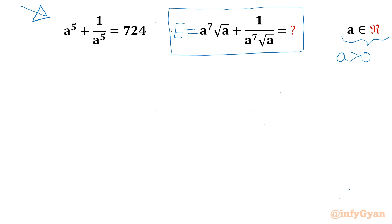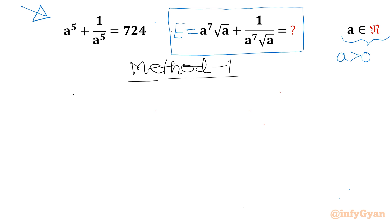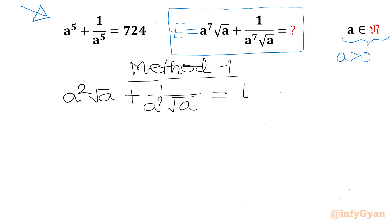I will proceed this problem in two ways today. So let me write Method 1, where I will use substitution. I will consider a·√a + 1/(a·√a) equal to t.